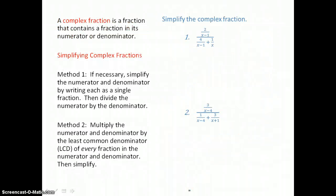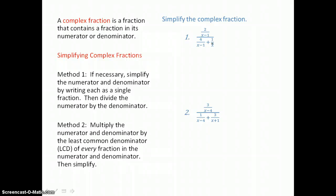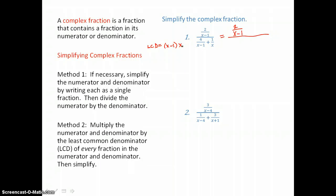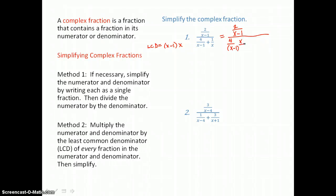Here we're going to simplify a complex fraction, which means we have fractions in the numerator and fractions in the denominator. Using method 1, we'll simplify the numerator and denominator by writing each as a single fraction. I have one fraction in the numerator, but I need to create one fraction in the denominator. So I need a common denominator — the least common denominator is going to have a factor of x minus 1 and a factor of x. For the first fraction in the denominator, I'll multiply by the form of 1, x over x, to get my common denominator. For the second fraction, I'll multiply by x minus 1 over itself to get my common denominator.